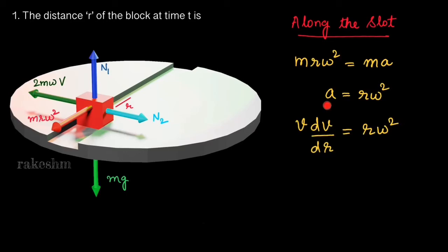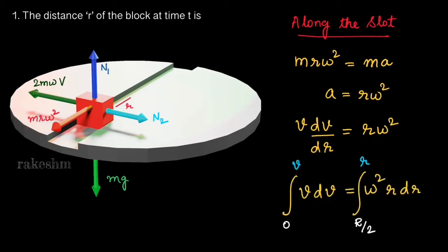We write the acceleration of the block as v·dv/dr = r·ω². Taking dr to the other side and integrating both sides, we find the speed of the block as a function of its distance from the center. When the block was placed at R/2, its speed was 0. When it is at some distance r from the center, it has speed v.